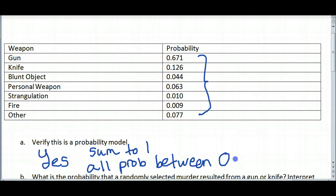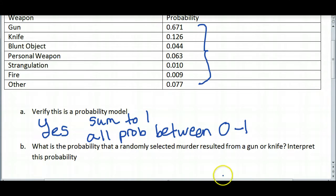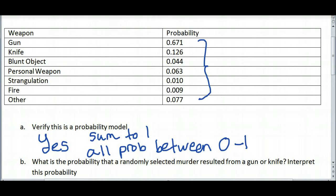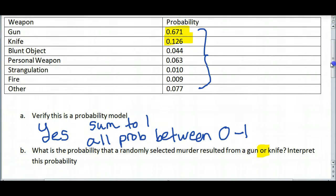Now I can go on to answer the next two questions. What is the probability that a randomly selected murder resulted from a gun or a knife? Now when we look at gun or, the key word here being or, we want to add probabilities. So we notice we have a 0.671 probability of a gun and a 0.126 probability of a knife.